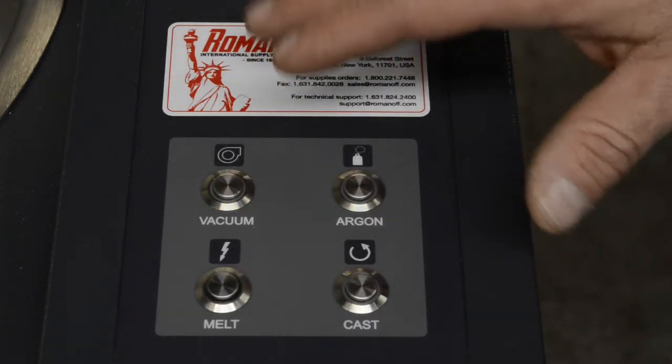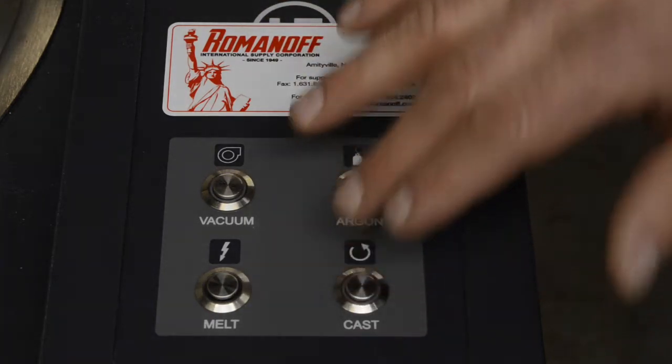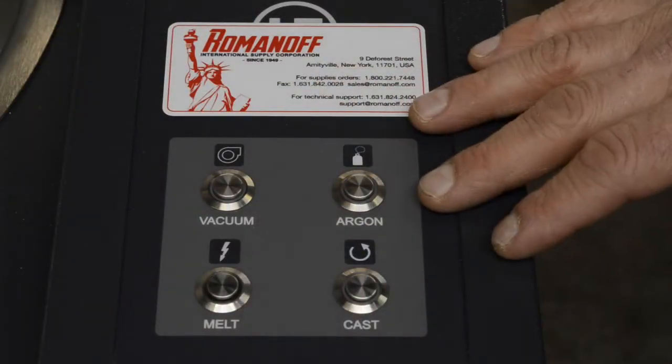Once it reaches its set temperature, this machine is four kilowatts of power, which can happen within a minute. At that point, we're going to press cast, and then it's going to start the casting cycle.